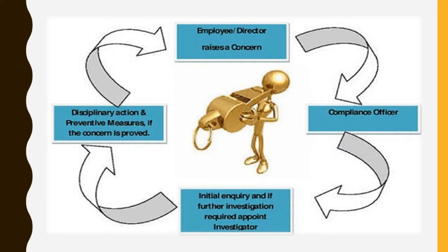The process of vigil mechanism or whistle blowing is as follows: first, the employee or director raises a concern. Next, it is dealt with by a compliance officer, who conducts an initial inquiry, and if further investigation is required, they appoint an investigator. The last step is to take disciplinary action and preventive measures if the concern is proved.